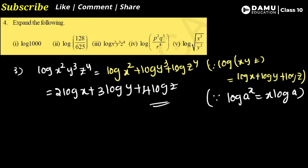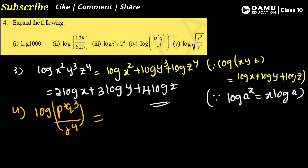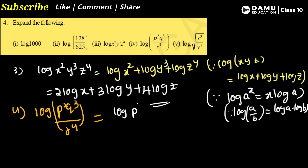Go with the fourth one: log(p²q³/r⁴). This is in log(a/b) format, so we use log a − log b. That gives us log(p²q³) − log(r⁴).